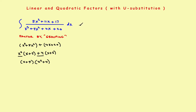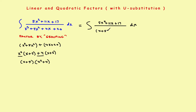So the denominator has been factored. Let's rewrite the integral with the factored denominator. The numerator remains 5x² + 11x + 17, and the denominator has been factored into (x + 5)(x² + 4). That completes the first step.